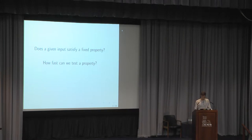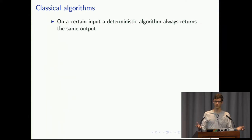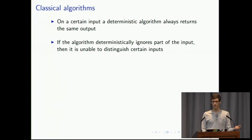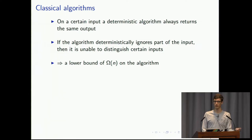To understand why sublinear time is so special, we first need to look at classical algorithms. Classical algorithms are always deterministic, which means that given a certain input, they always give back the same output. They need to consider the entirety of the input, because otherwise they can't distinguish between two different inputs. This gives us a lower bound of Omega(n) on how fast the algorithm can run, because we have to look at the entire input of size n.